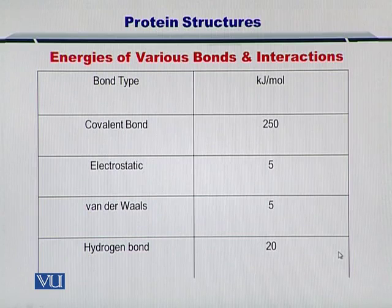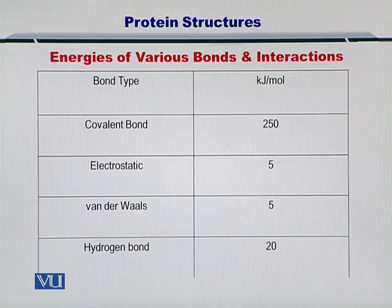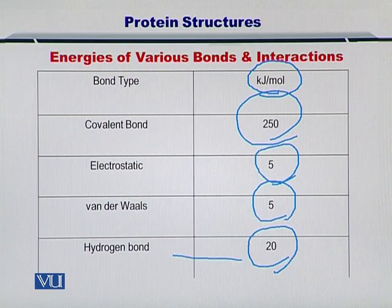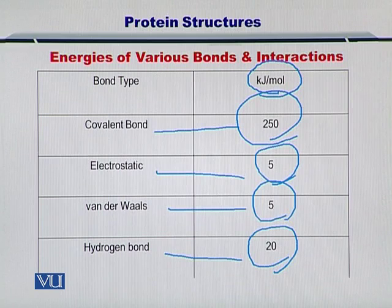There are four types of interactions that describe, determine, and govern this process. These are the covalent bonds, the electrostatic interactions, the van der Waals forces, and the hydrogen bonds. As you can see in the column at right, the energy given out due to each one of them — you can imagine that a protein would essentially want to make a covalent bond.